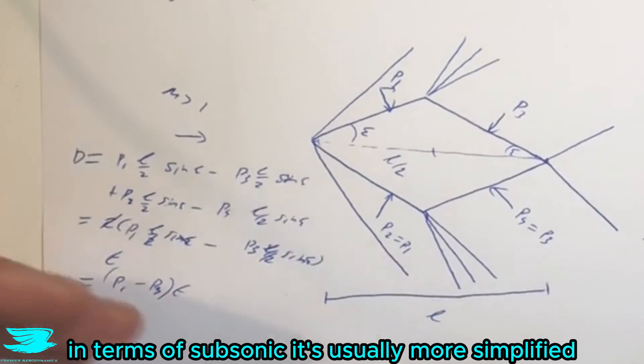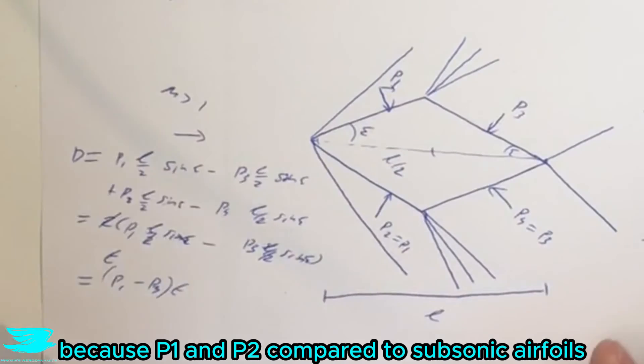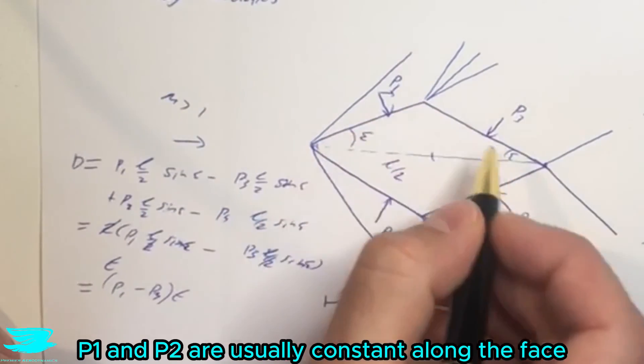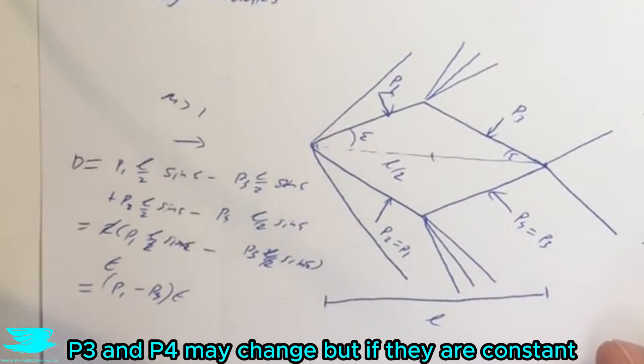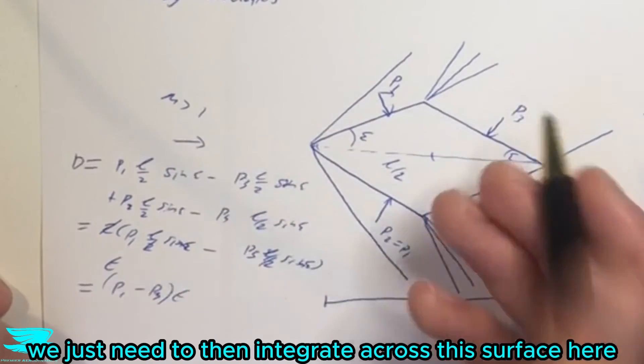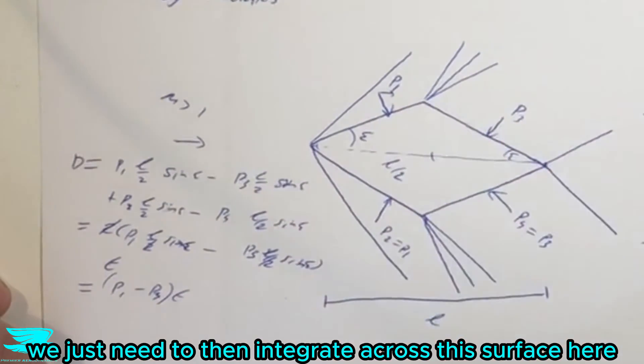And that's how powerful this is in terms of supersonic. It's usually more simplified because P1 and P2, compared to subsonic airfoils, P1 and P2 are usually constant along the face. P3 and P4 may change, but if they are constant, then we can use this approach. If they are not constant, we can use the approach in air fundamentals number 45. We just need to then integrate across this surface here.